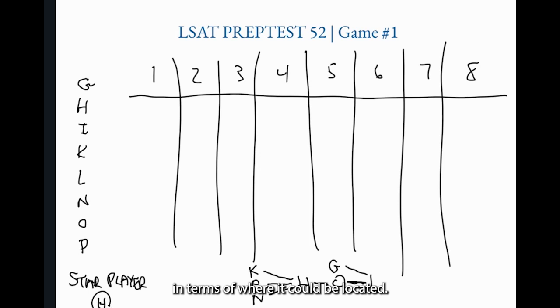So we need to be careful not to over restrict G in terms of where it could be located. Now the last rule provides kind of a mirror image to what we just did. A mirror image to the G, L relationship is the K, I relationship. I after K. Just like G could quite possibly float all the way to the front, I, it is very possible, could float all the way to the back. That is to the far right of the diagram. Imagine I doing that and you'll make sure not to avoid some possibilities for I that will become relevant and very important later.